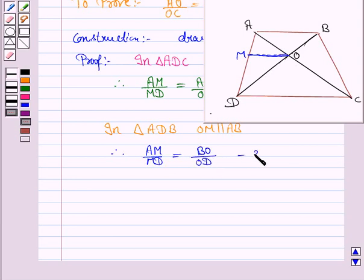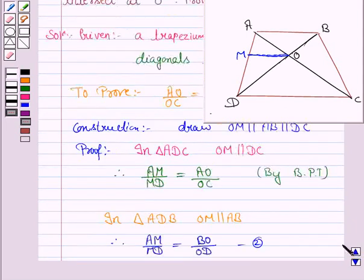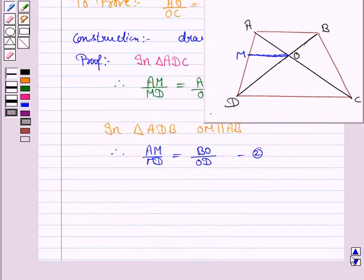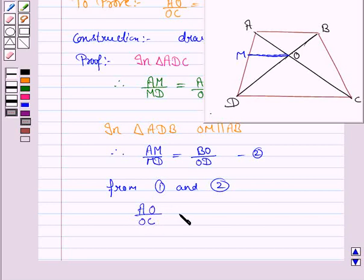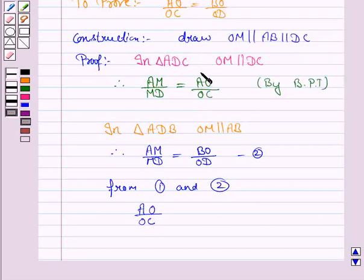Let's name this as 2. Now, we have got that AM upon MD is equal to AO upon OC. Also, AM upon MD is equal to BO upon OD. So, from 1 and 2, we have AO upon OC is equal to BO upon OD. Hence proved.